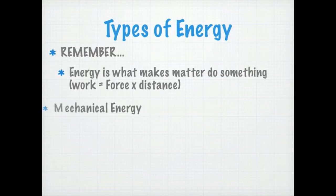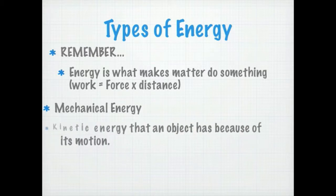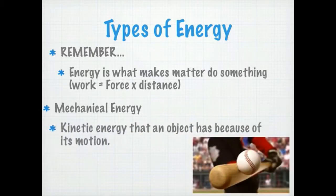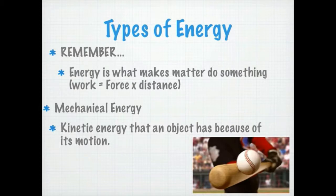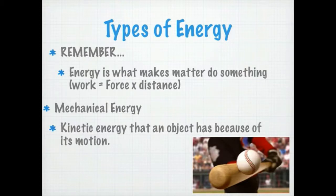The first type we'll look at is called mechanical energy — that's kinetic energy that something has because of its movement. If we look at this example with the baseball bat on the ball, there is energy in that bat as it swings through the strike zone. The mechanical energy of the bat swinging is transferred to the ball, exerting a force and making that ball move a certain distance.